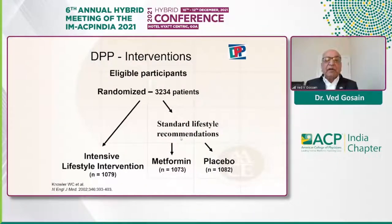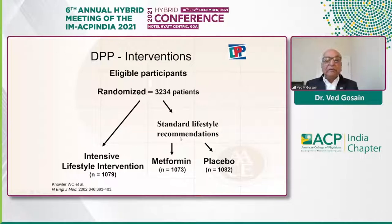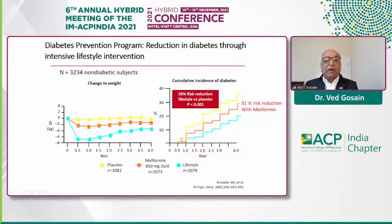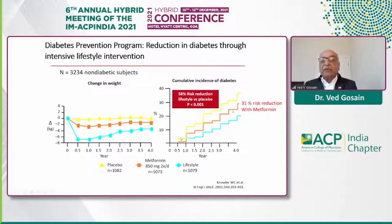The diabetes prevention program had approximately 3,000 patients randomized to lifestyle intervention — basically 150 minutes of exercise per week — metformin 850 mg twice daily, or placebo. After nearly four years of follow-up, patients assigned to lifestyle intervention lost approximately 7% of their body weight, and there was a 58% risk reduction in progression of pre-diabetes to diabetes. With metformin, there was a 31% risk reduction. Both were effective, but lifestyle was clearly more effective.